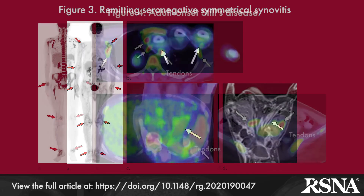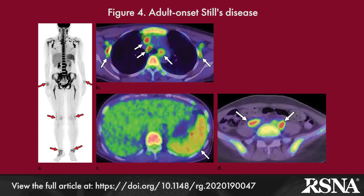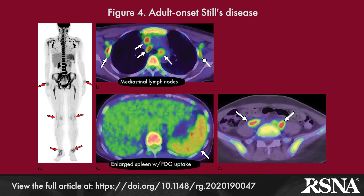Adult-onset Still's disease is a disease of young adults characterized by quotidian fevers spiking daily, evanescent rash, and chronic polyarthritis. In addition to widespread joint involvement, hepatosplenomegaly and lymphadenopathy occur frequently. Uptake in the joints, bone marrow, spleen, and enlarged lymph nodes on PET-CT is characteristic.